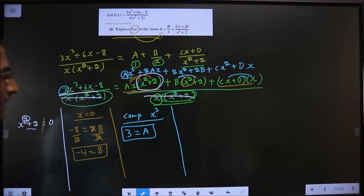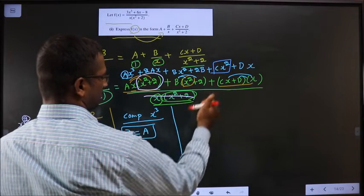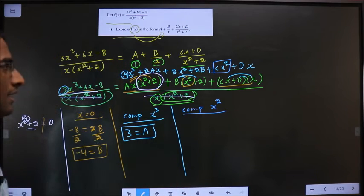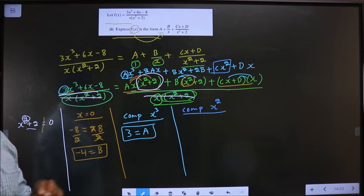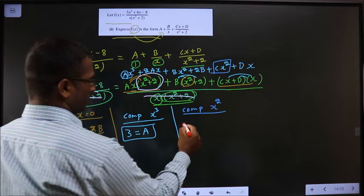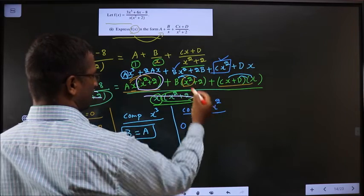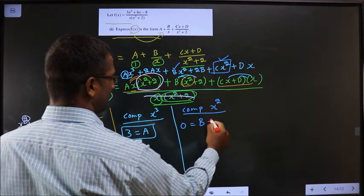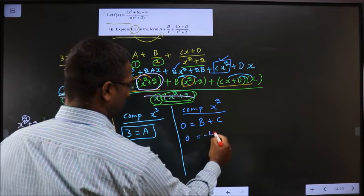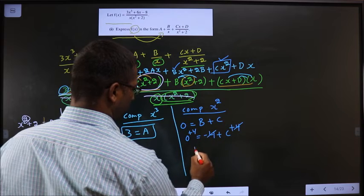Now find C. C is the coefficient of x². Comparing x² coefficients on both sides: on the left there is no x² term, so its coefficient is 0. On the right we have Bx² and Cx², so 0 = B + C. Since B = −4, we get 0 = −4 + C, and adding 4 to both sides gives C = 4.